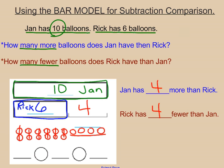To set up the subtraction sentence then, I would have 10 balloons from Jan. I need to take away Rick's 6 and that will equal 4 left over. So 4 balloons, more that Jan has or 4 less than Rick has.